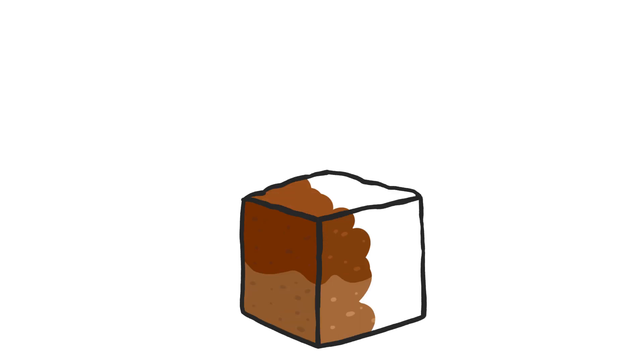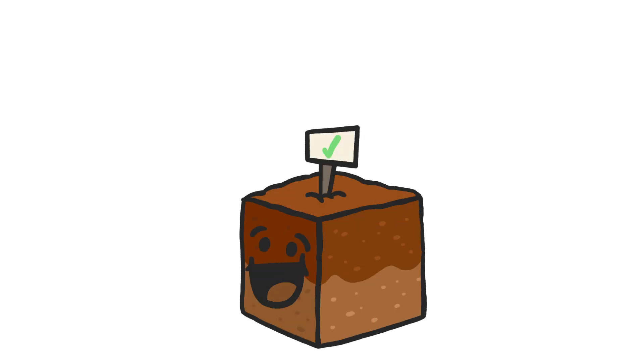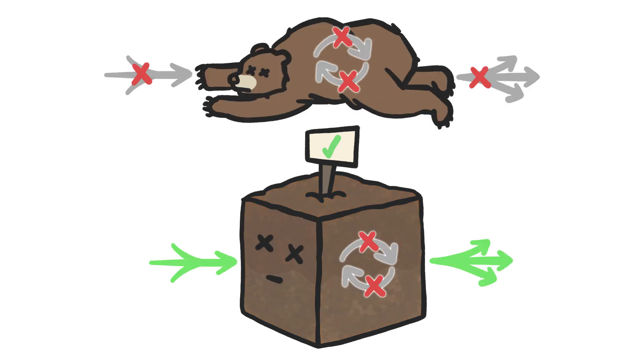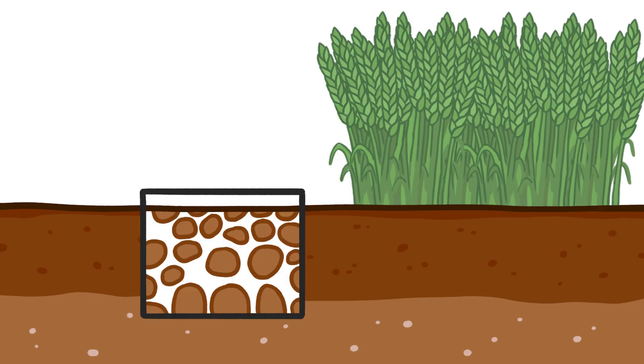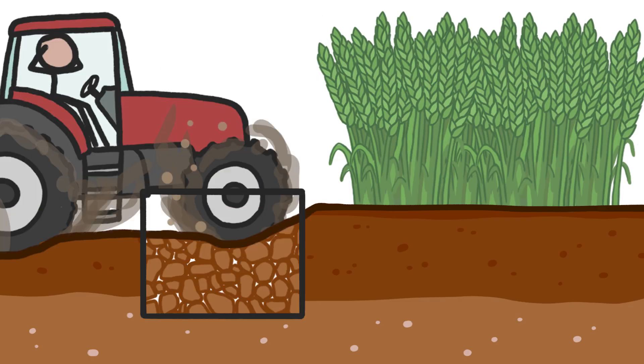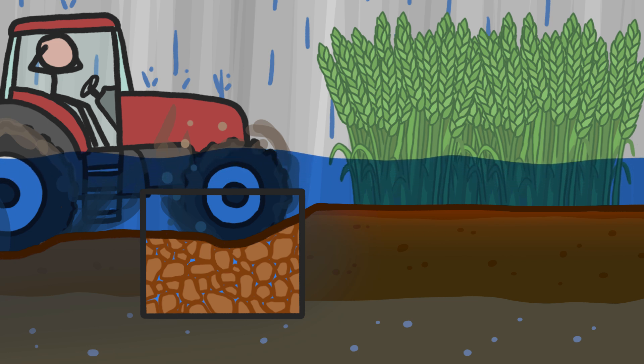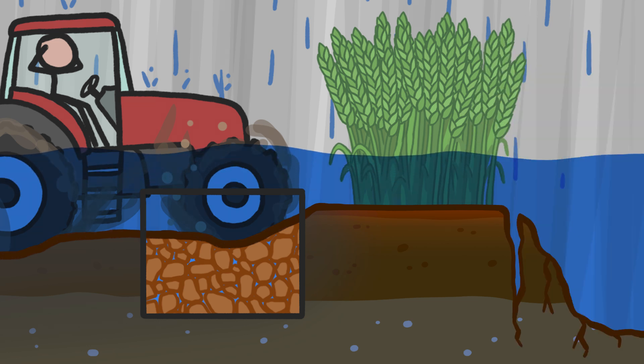And maybe the most compelling argument for soil being alive is that it can die. Like a bear, soil can lose its ability to carry out all its internal processes and external interactions. Like if soil's air-filled pores get too smashed, it starts losing its ability to hold water, leading to floods and erosion.